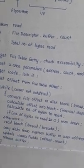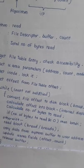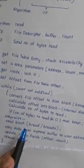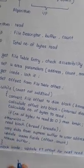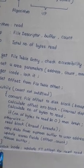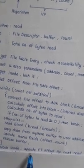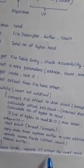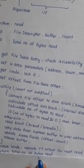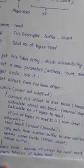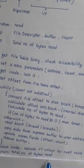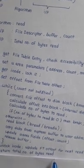Once the reading is done, we unlock the inode and update the file table offset for the next read operation. Finally, we return the total number of bytes that were read.